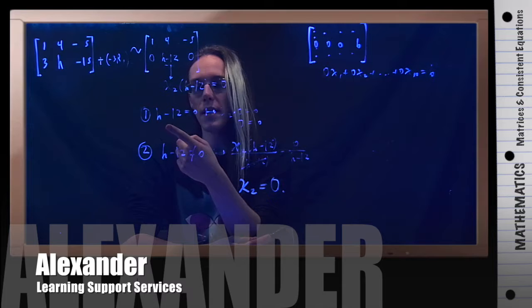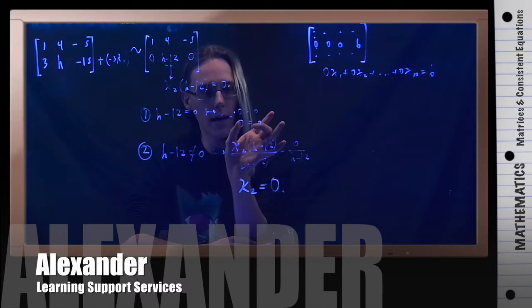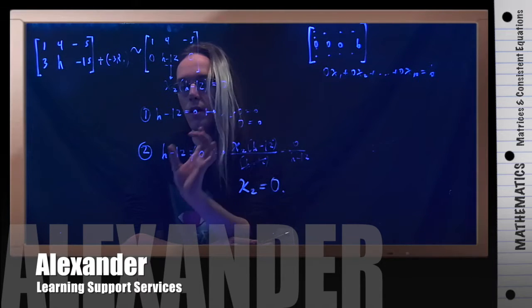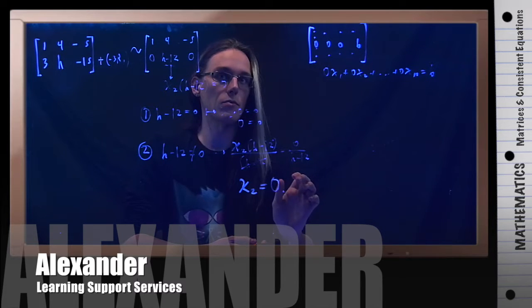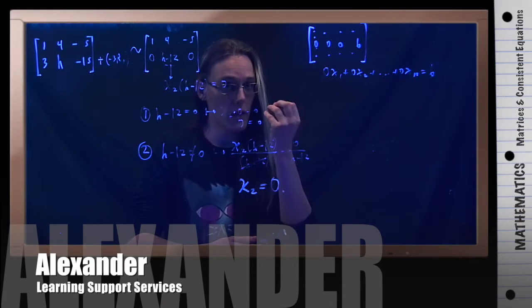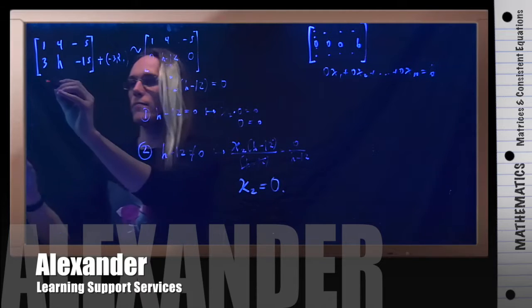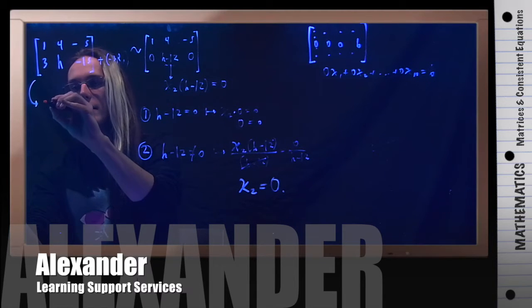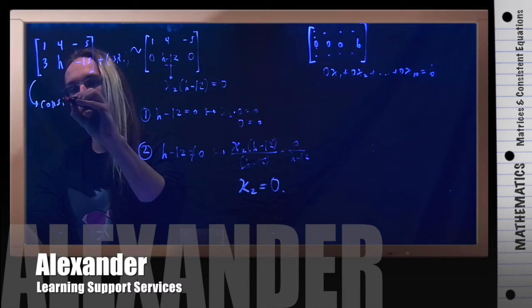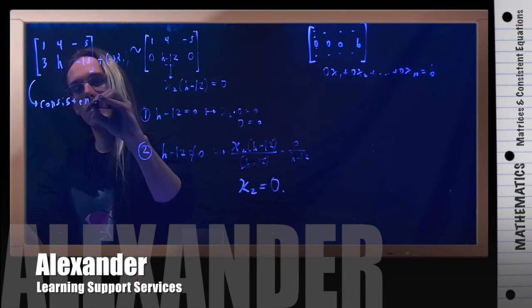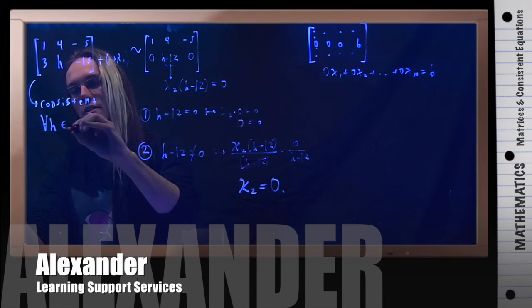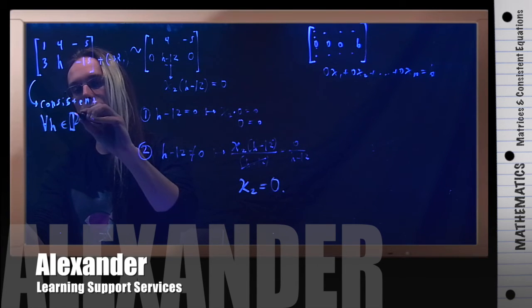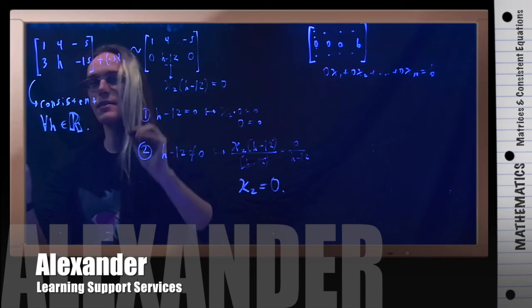So in both cases, when h minus 12 is 0, I have a consistent system of equations. And when h minus 12 is not 0, I still have a consistent system of equations. So in this case, this is consistent for all h, as long as h is a real number. And that is this example.